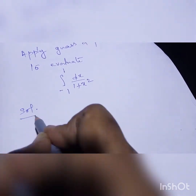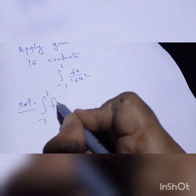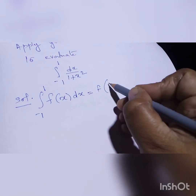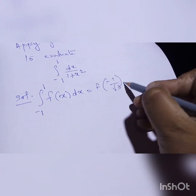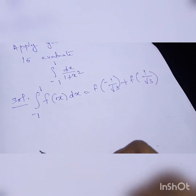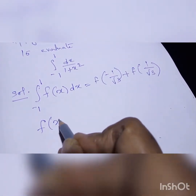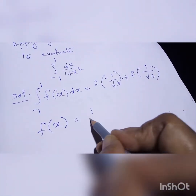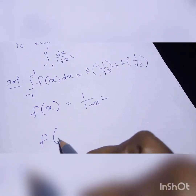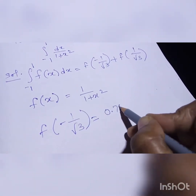Let's see the solution. You know the formula: integration of minus 1 to 1 of f(x) dx is equal to f(-1/√3) plus f(1/√3). This is the formula for the two-point method. In our question, f(x) = 1/(1 + x²). So first, substitute to find f(-1/√3), and you will get 0.75.